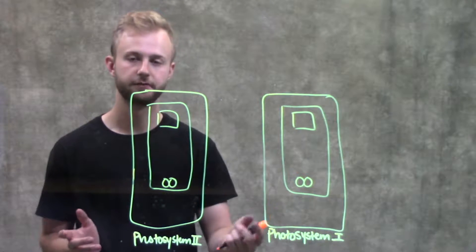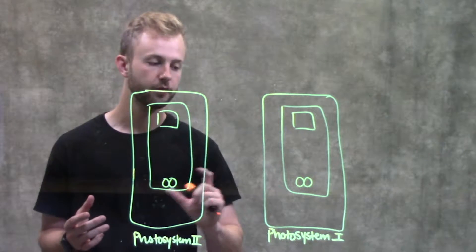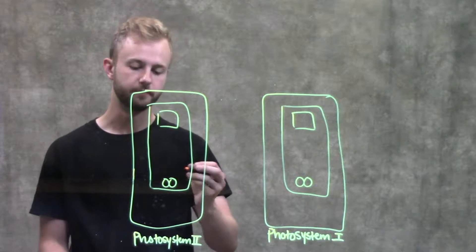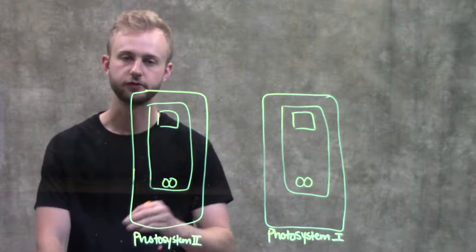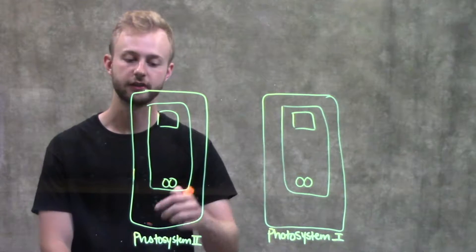There's two photosystems involved in this process, and they're pretty similar except there's just one small difference. We'll start with photosystem two. Photosystem two is first in this pathway.